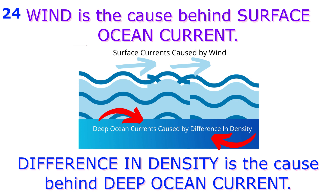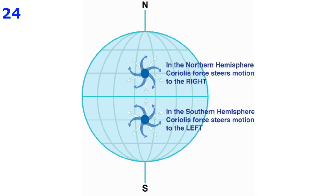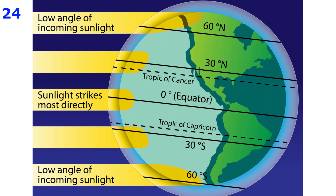Density variations are due to differences in temperature and salinity. The wind system of the world forces the surface water of the ocean to move in a particular direction. The direction is clockwise in the northern hemisphere and anti-clockwise in the southern hemisphere. This is due to the Coriolis effect, caused by the rotation of the Earth.